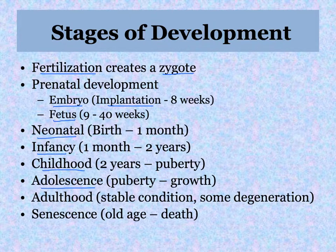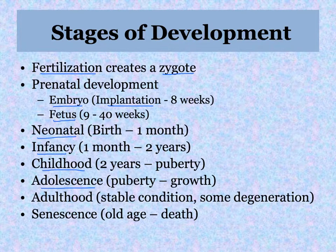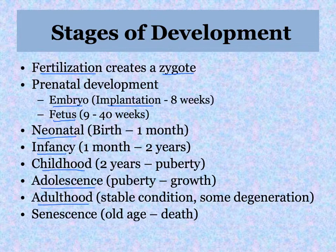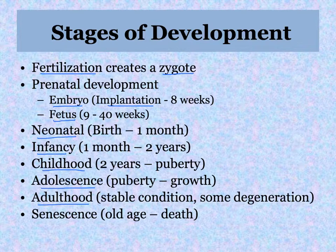Adolescence ends when you're done growing, which is really hard to put an end date on. There's a lot of mental development — neurons are reforming new connections and emotional development is happening. Adulthood is a relatively stable condition where things are not changing for many years, with some degeneration starting in body systems. Then senescence is when you reach old age until the point of death, the end of the lifespan.